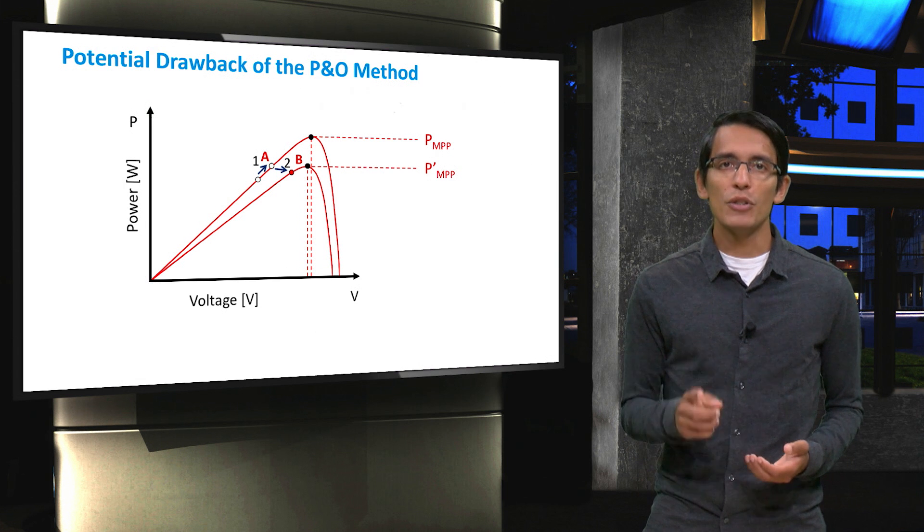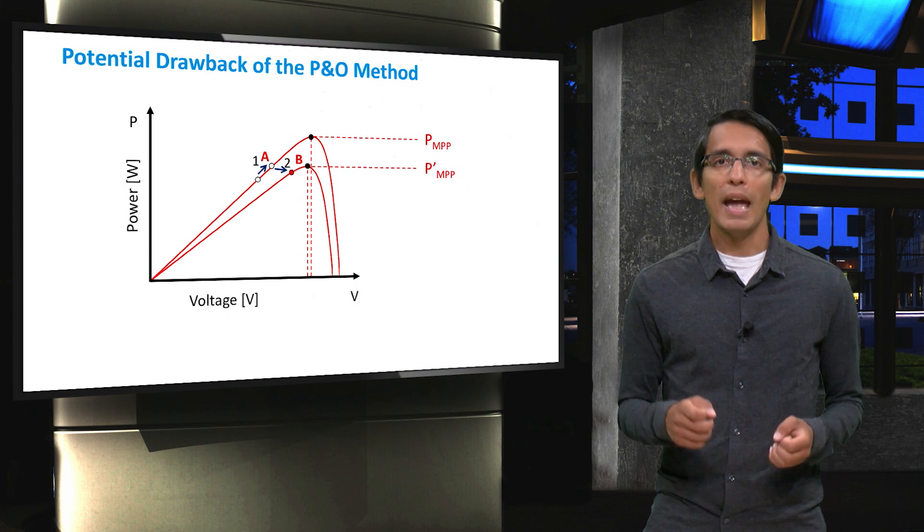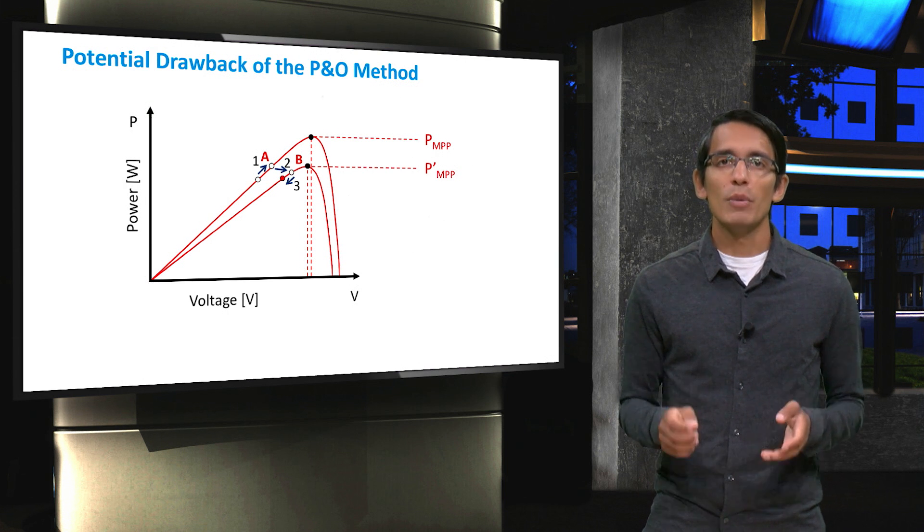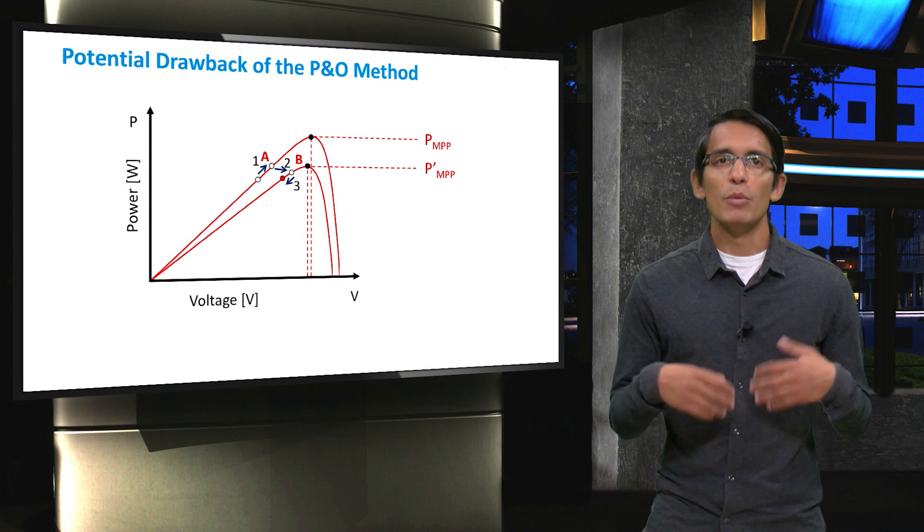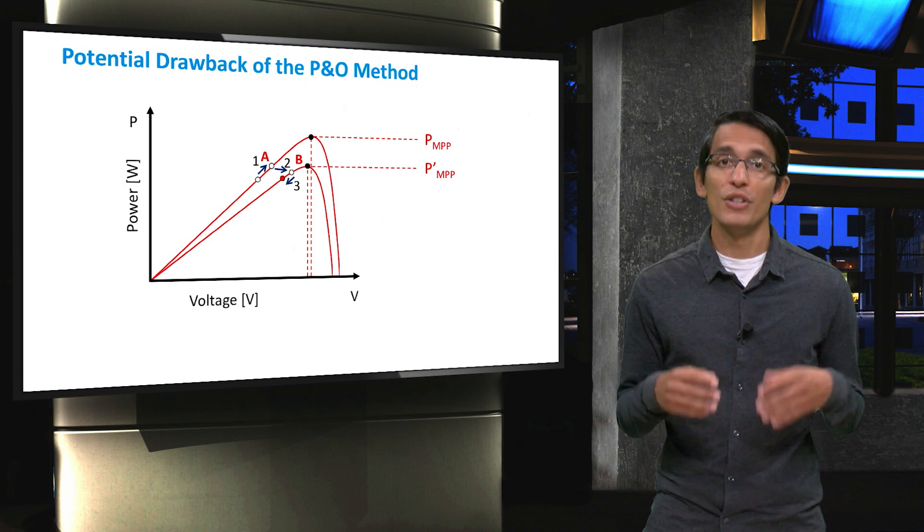Naturally, the system will now assume that the maximum power point is to the left of the current voltage, and so it will move in that direction. The system will eventually correct itself, but if these changes in irradiance are frequent enough, it could result in a PV system operating far from the maximum power point for a significant amount of time.